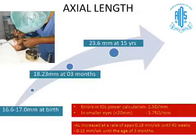As far as axial length is concerned, at birth the axial length of the child is around 16.6 to 17 mm, which increases very rapidly in the initial 3 months to about 18.23 mm at 3 months. The rate of increase may be as high as 0.15 mm per week during this time. The axial length keeps on increasing rapidly till 2 to 3 years, after which the rate decreases, but it continues to increase till the second decade of life.